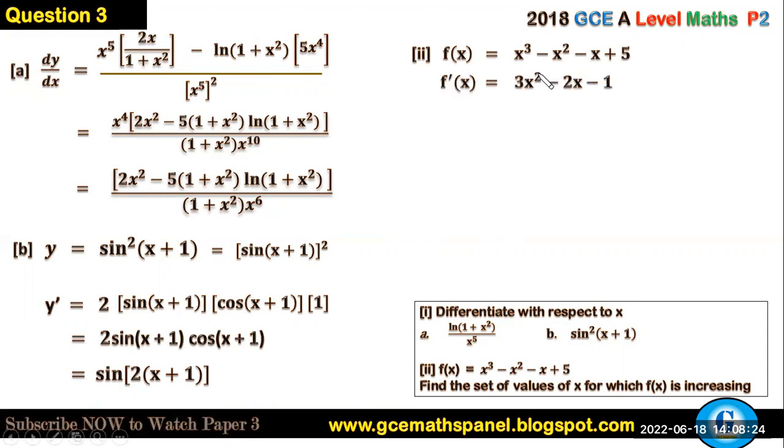So from here our f'(x) is 3x² - 2x - 1 rather. You equate f' to zero and when you solve that equation you will have x to be equal to -1/3 or x equals 1. Now you are going to look for the gradient of this function in three different regions. The region where x is less than -1/3, the region between -1/3 and 1, and the region above 1.